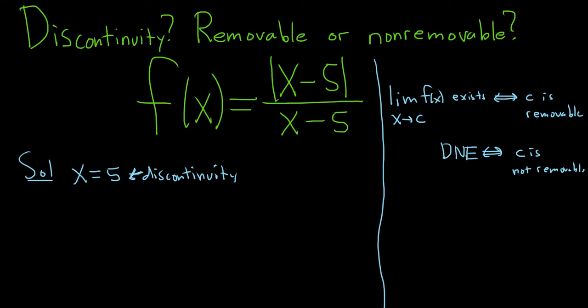In this problem we're going to take the limit of this function as x approaches 5, and then we'll figure out what the answer is. If the limit exists, we know it's removable. If the limit does not exist, then we know it's not removable. So let's go ahead and work that out. The goal here is to figure out the limit as x approaches 5. And the reason we're approaching 5 is because 5 is our discontinuity.